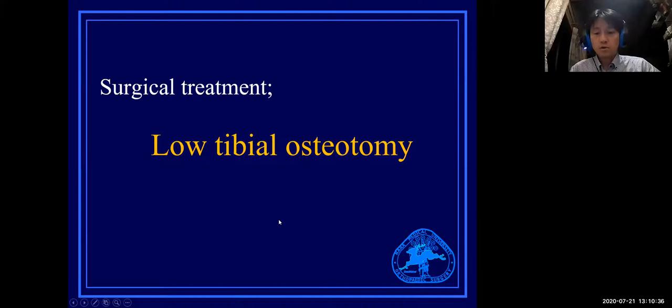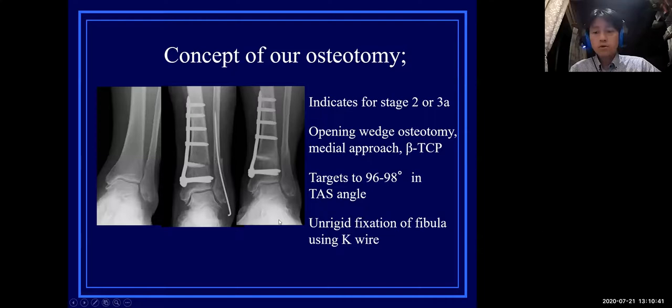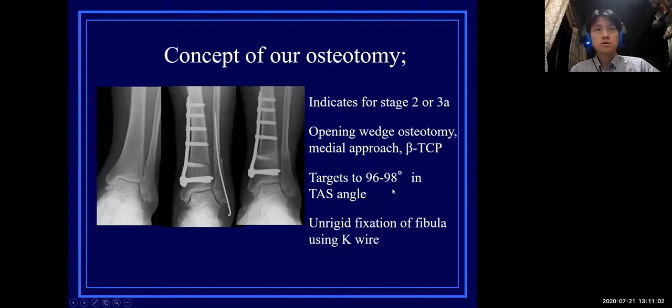The next topic is low tibial osteotomy. The concept of our osteotomy is shown in this slide: indicated for stage 2 or 3A, using an opening wedge osteotomy via medial approach with beta-TCP calcium phosphate usage. It targets 96 to 98 degrees in the TAS angle, with rigid fixation of the fibula using a Kirschner wire.